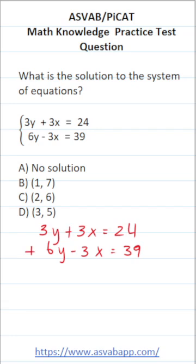That said, if we look at our system here, what happens if we just add the two equations together? What is 3x plus negative 3x? It's eliminated. So that's all we have to do in this case.